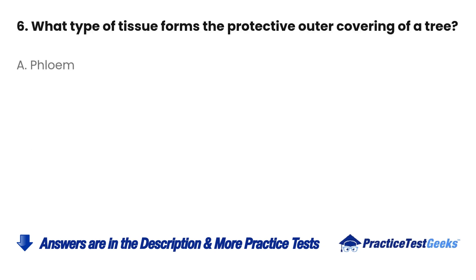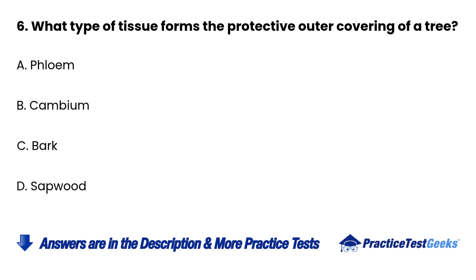Question 6: What type of tissue forms the protective outer covering of a tree? a. Phloem. b. Cambium. c. Bark. d. Sapwood.